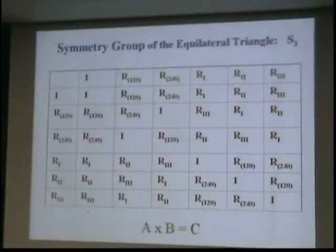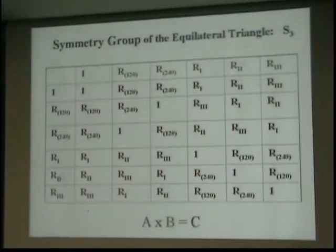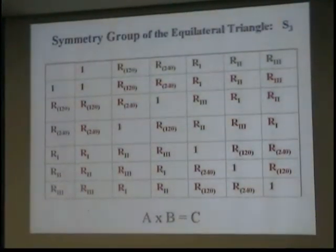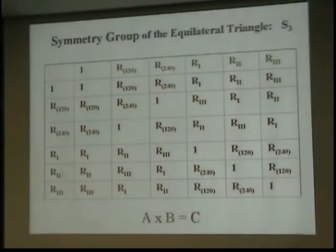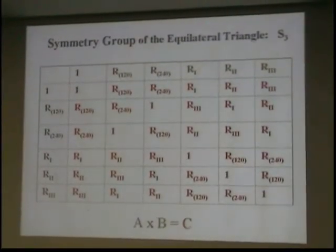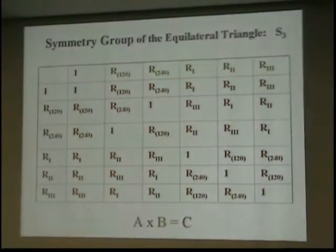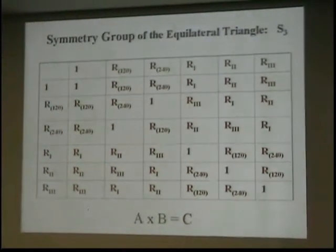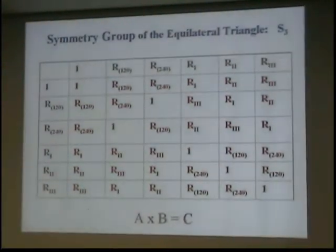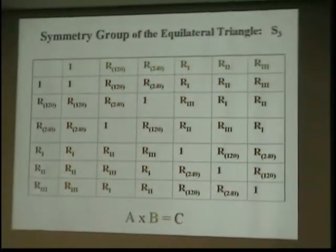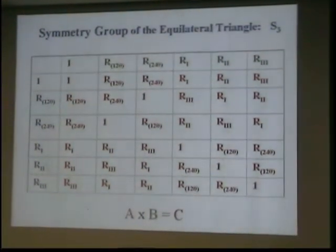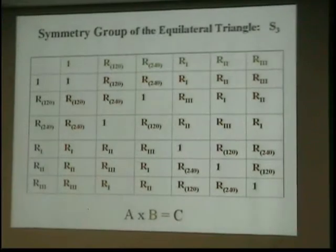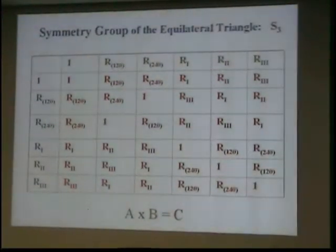So now it's not hard for the simple equilateral triangle to work out the multiplication table. So here it is. It's like one of those highway mileage maps. But there's a really big difference between this and the highway mileage map. So what do we got here? We've got the first operation we do, called A, say a rotation through 120. We follow it by another one, let's say a reflection about 2, and we get a reflection about 1. Trust me. You can go home and check it. That's what you get.